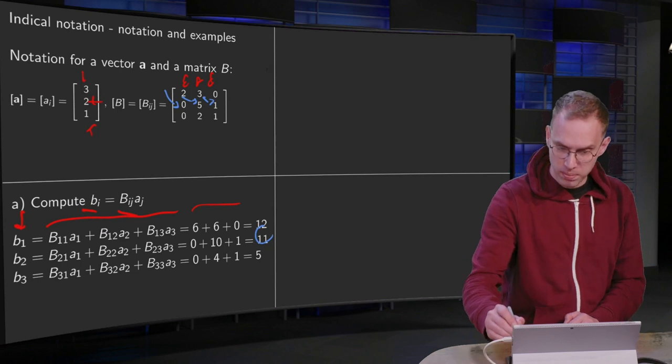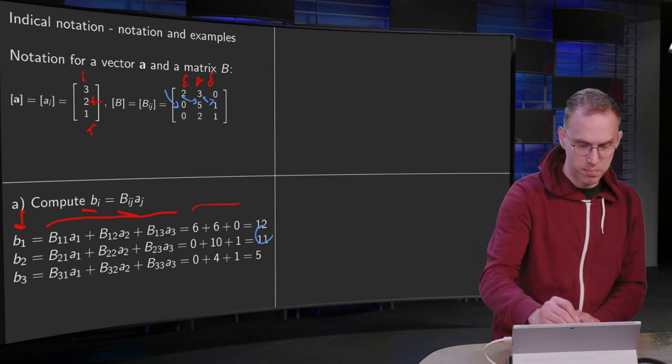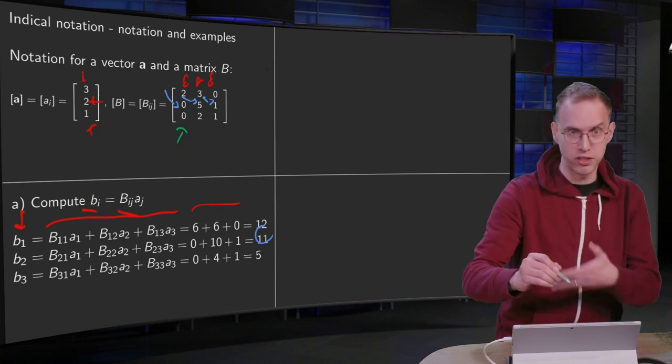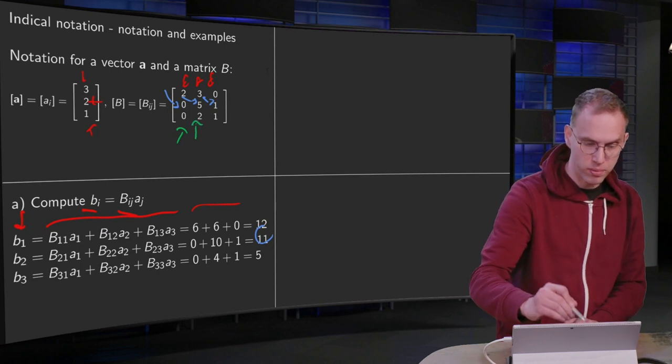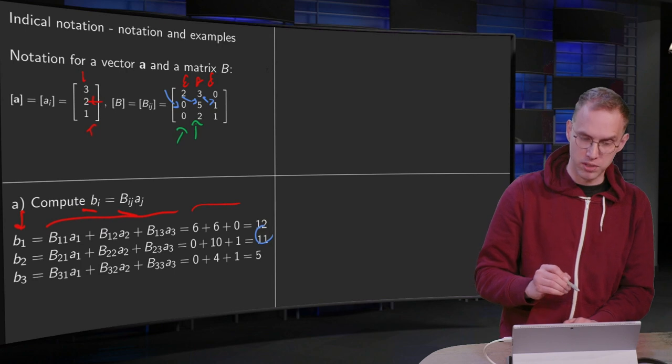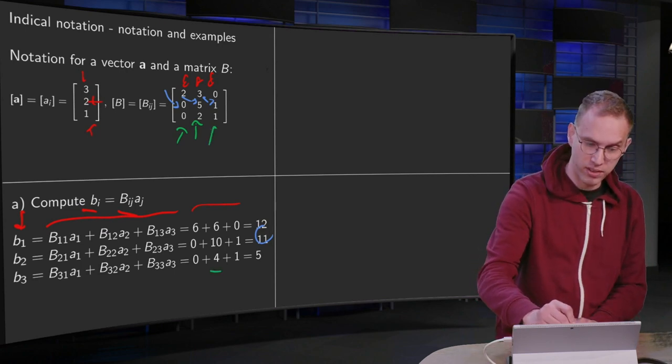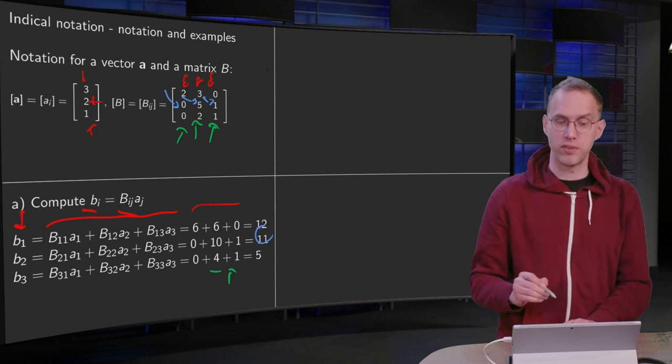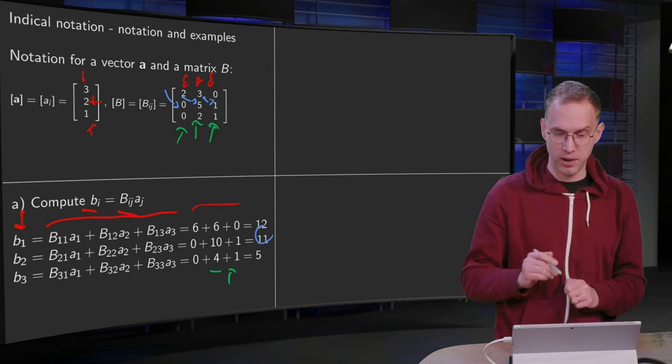Now for the last one, we need the b31, which is over here, which is 0 times a1 equals 3, but still 0. Then the b32 is 2 times the 2 from the a2 gives 4. And finally the b33 is 1 times 1 equals 1, so 4 plus 1 equals 5. So that's how you can compute this bi product.